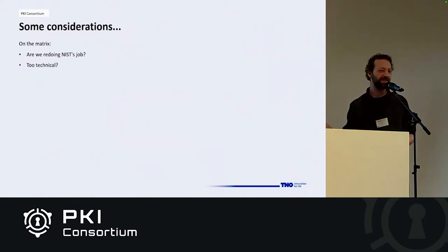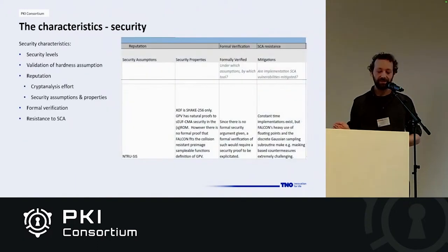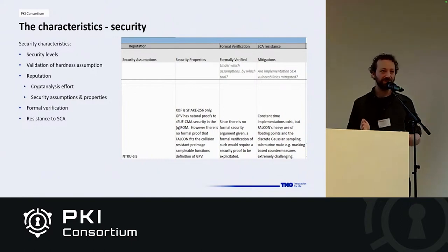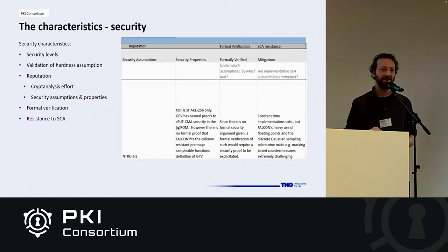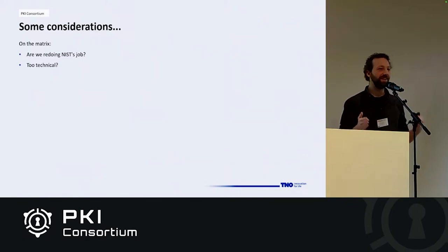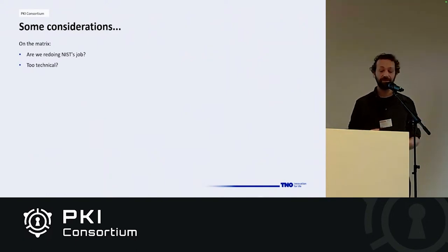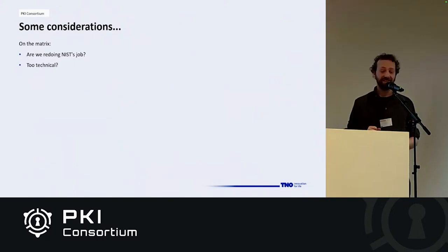Our target audience may find the characteristic matrices a bit technical. Talking about strong existential unforgeability or the Q-ROM is not something any developer can work with. But to be clear, these matrices are supplementary material. The main goal is to establish the decision tree, and at the end of a recommendation, we want to provide background information so that a technically inclined developer can understand the reasoning behind it.